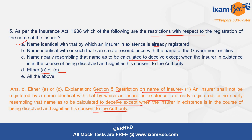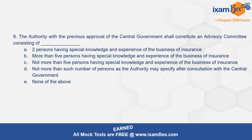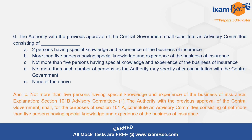Question number 6: the authority with the previous approval of the central government shall constitute an advisory committee consisting of — and the correct option is C — not more than 5 members having special knowledge and experience of the business of insurance. Section 101B mentions the advisory committee, stating that the authority shall, for the purposes of Section 101A, constitute an advisory committee consisting of not more than 5 members with special knowledge of the business of insurance.